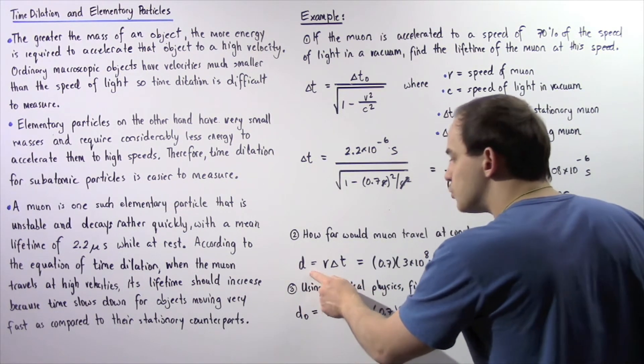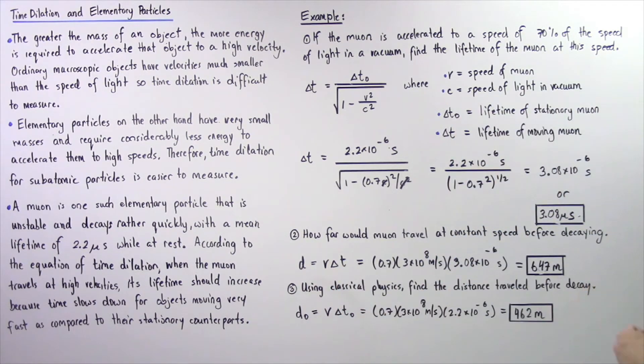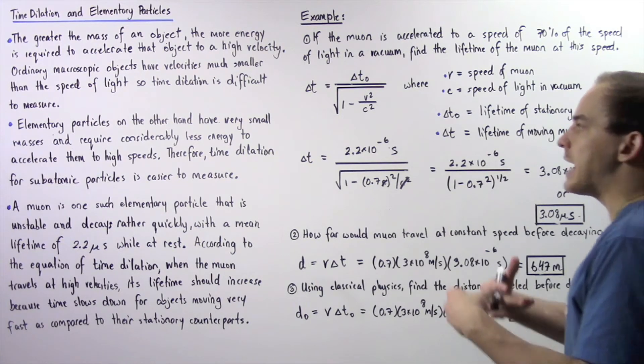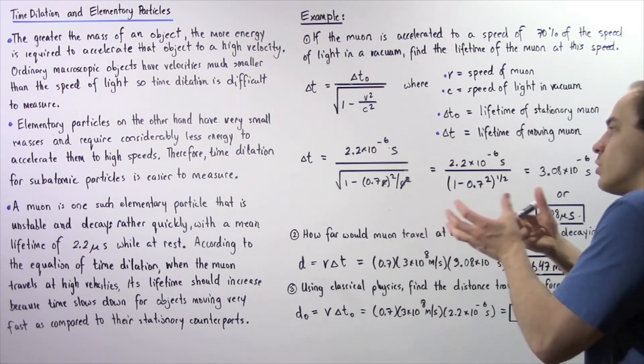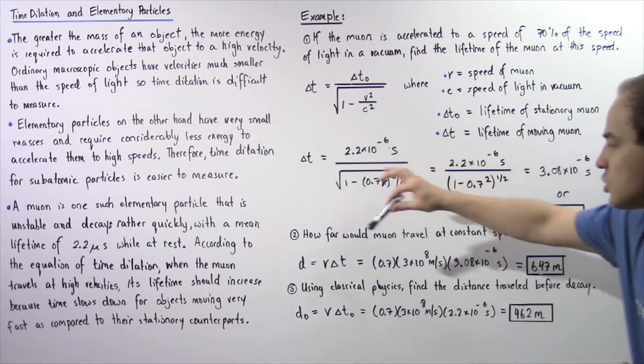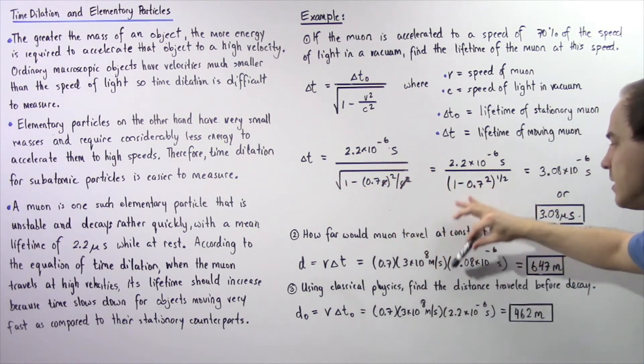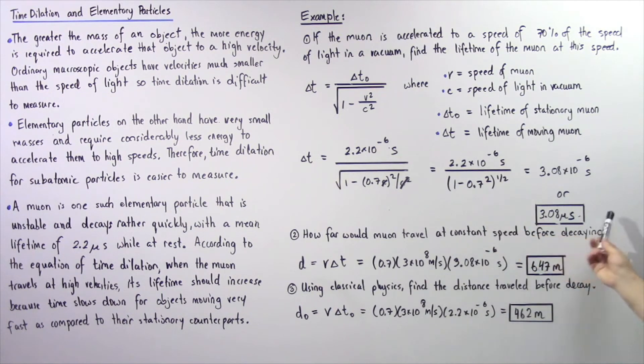So the distance is equal to the velocity of our muon multiplied by the lifetime of that muon taken into consideration time dilation. So velocity is 0.7 multiplied by the speed of light in a vacuum multiplied by this quantity. So we get about 647 meters.